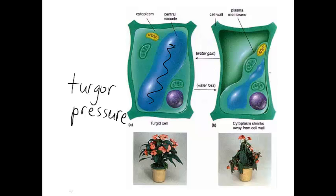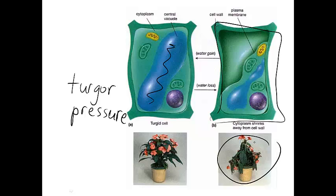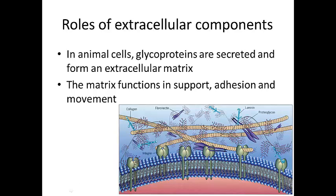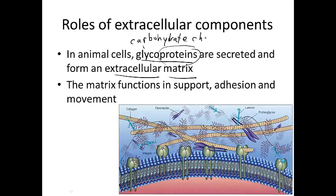When there's not enough water, the vacuole shrinks and we get a flaccid cell and a wilted plant. In animal cells, the extracellular component you're responsible for is the extracellular matrix, which is made up of glycoproteins. 'Glyco' refers to carbohydrate, so these are proteins with carbohydrate chains on them. They work for support, adhesion, and movement.